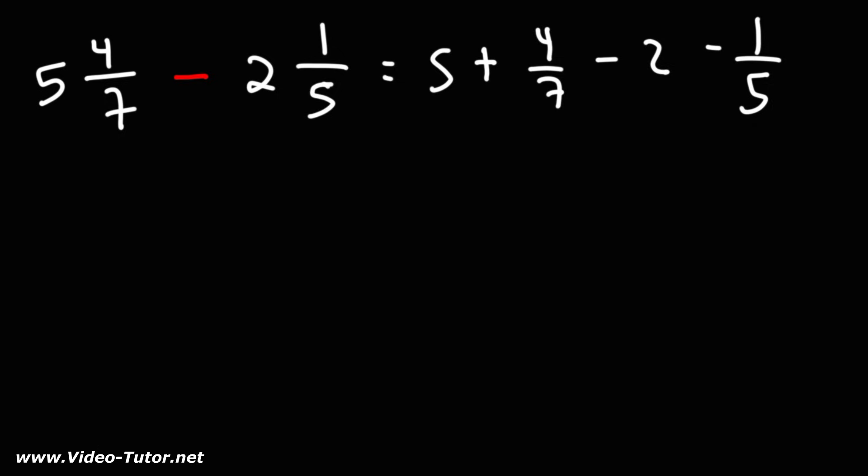So now let's combine the whole numbers. 5 plus negative 2 or 5 minus 2, that's equal to 3. And then we're left with 4 over 7 minus 1 over 5.